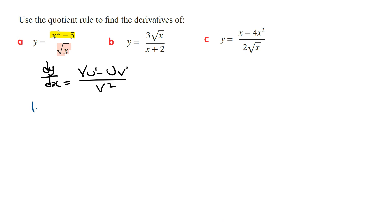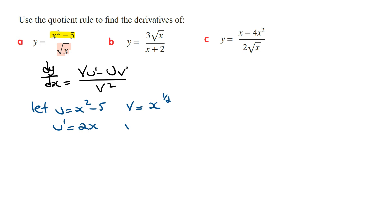If we let u equal x squared minus 5, then deriving this, u dash is going to be 2x. v is going to be the bottom function which is the square root of x, and we write this as x to the power of a half. And so deriving this, v dash is going to be a half times x to the power of minus a half.